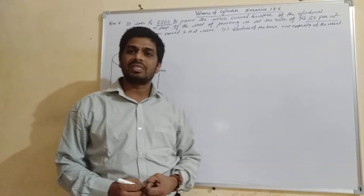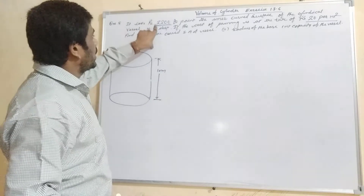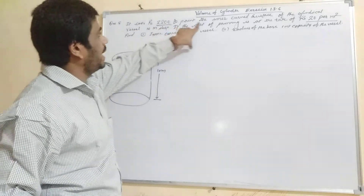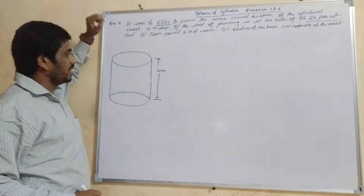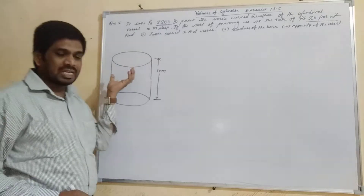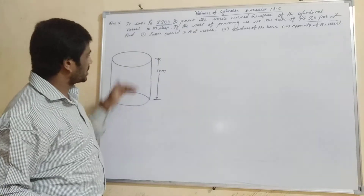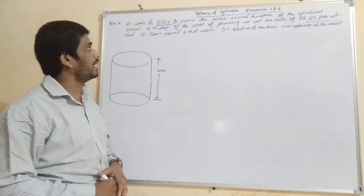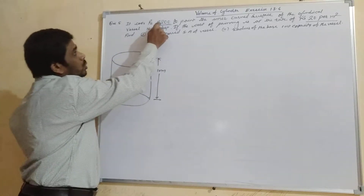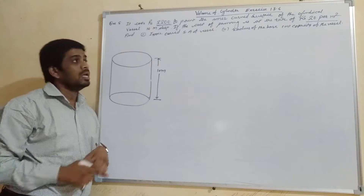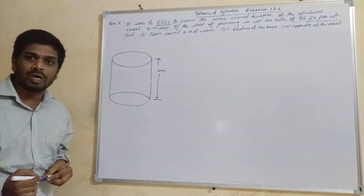Hello everyone, let's see the 5th question of exercise 13.6. In this question, it costs rupees 20,100 to paint the inner curved surface area of a cylindrical vessel 10 meters deep. The height of the vessel is 10 meters, so depth is given as 10 meters. The total cost of painting the inner curved surface area is 20,100 rupees, at the rate of 20 rupees per square meter.